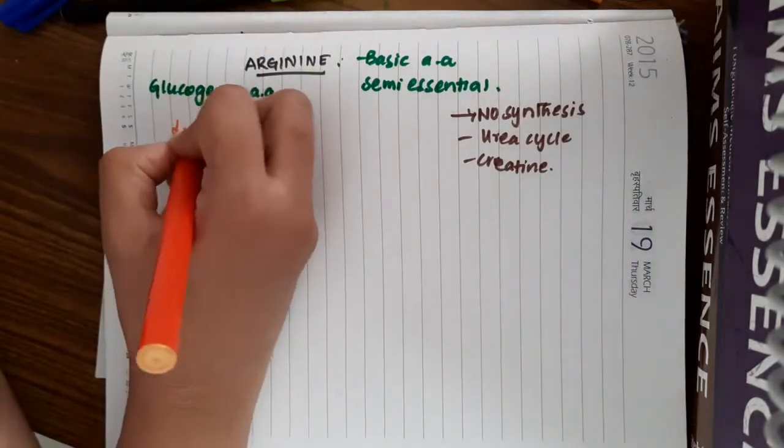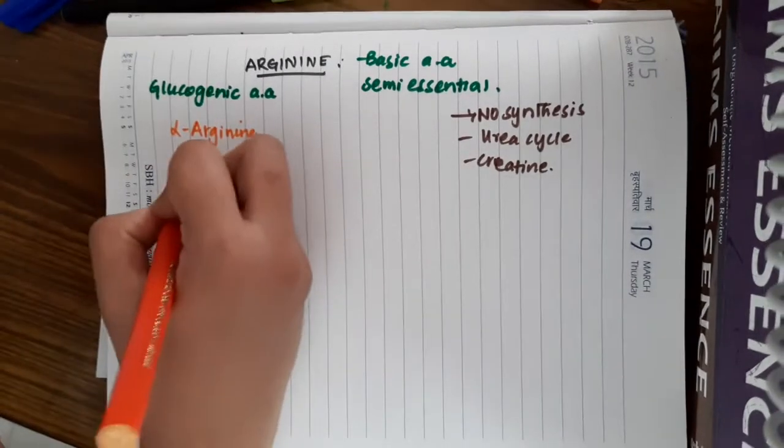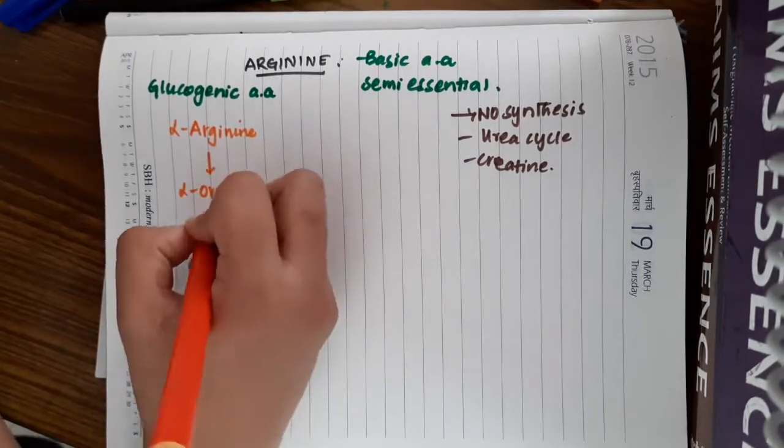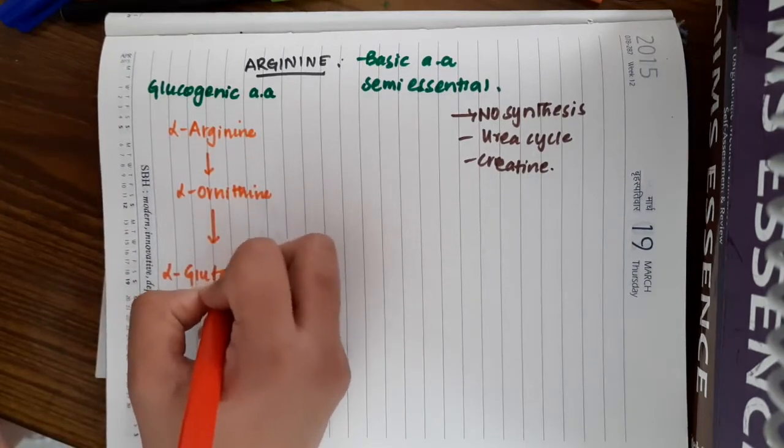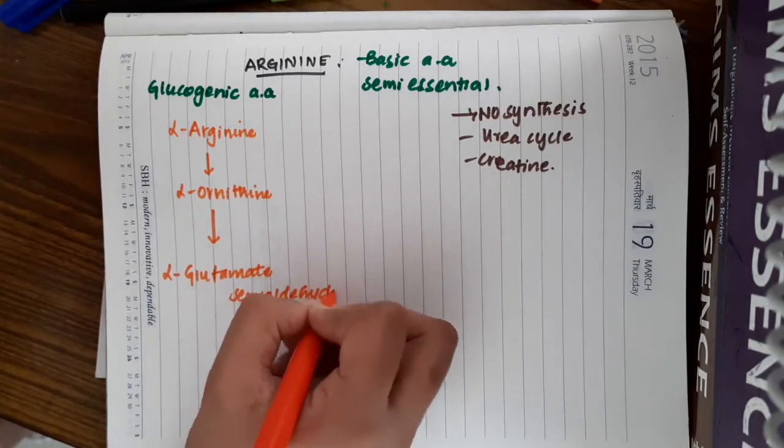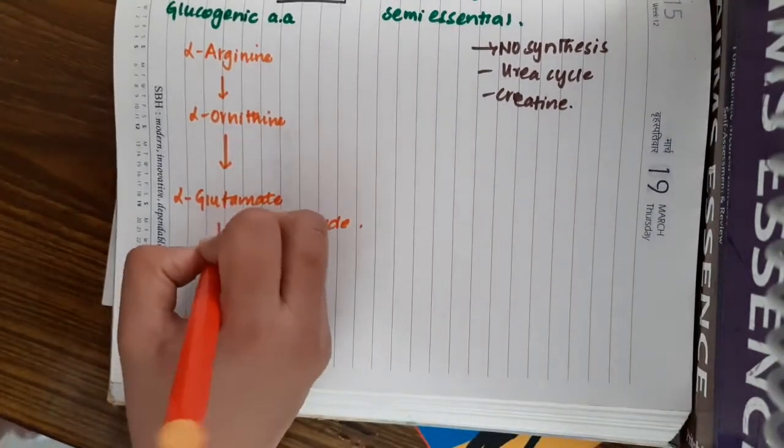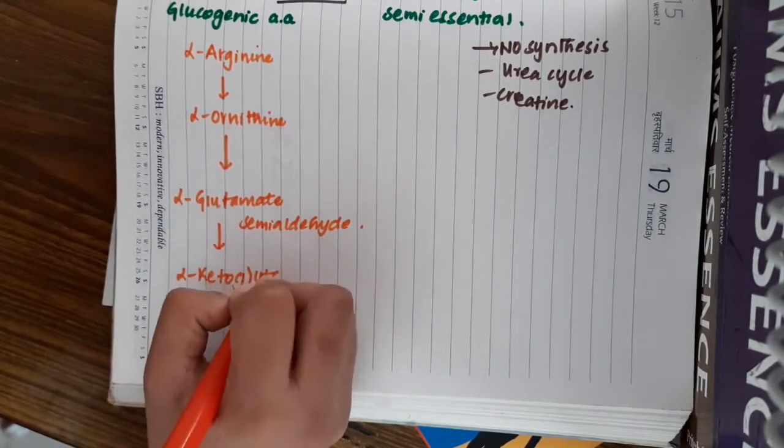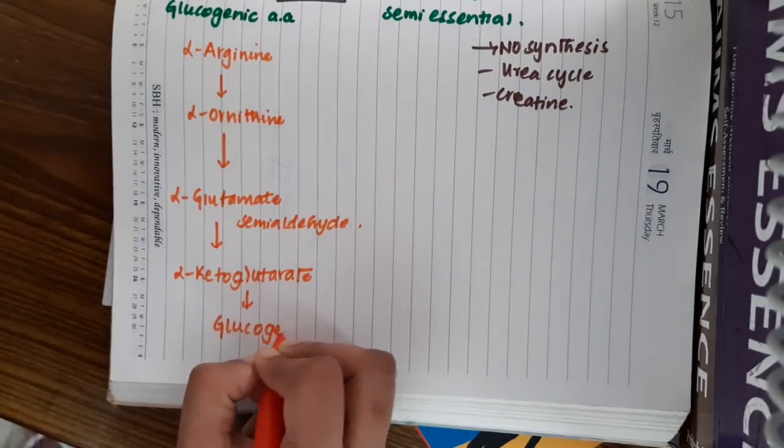If you see, L-arginine gets converted to L-ornithine in the presence of the enzyme arginase. This L-ornithine gets converted to L-glutamate semi-aldehyde in the presence of the enzyme arginine aminotransferase. This L-glutamate semi-aldehyde will undergo series of reactions and it forms alpha-ketoglutarate which enters the Krebs cycle. Thus, it is glucogenic.